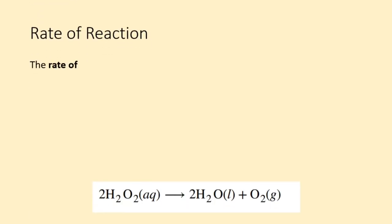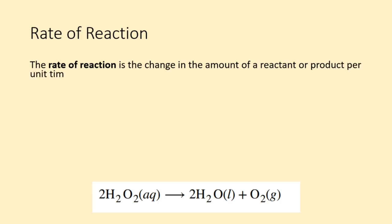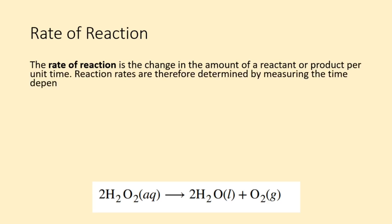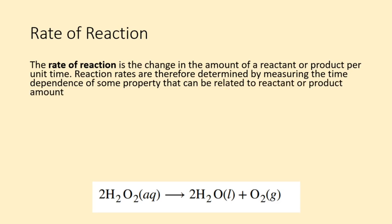The rate of reaction is the change in the amount of a reactant or product per unit time. Reaction rates are therefore determined by measuring the time dependence of some property that can be related to reactant or product amounts.